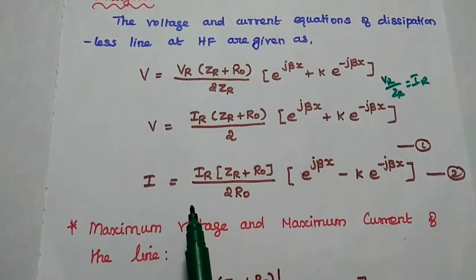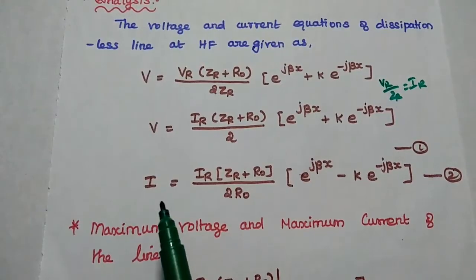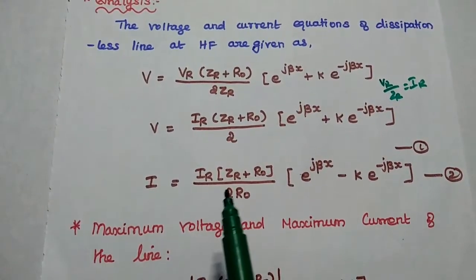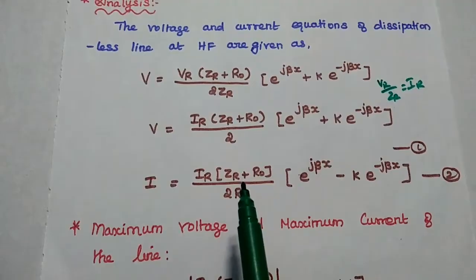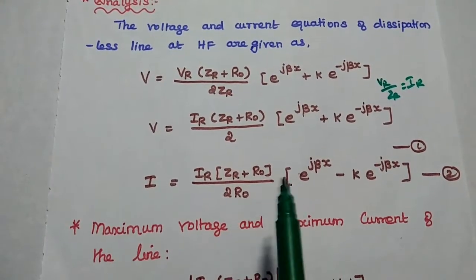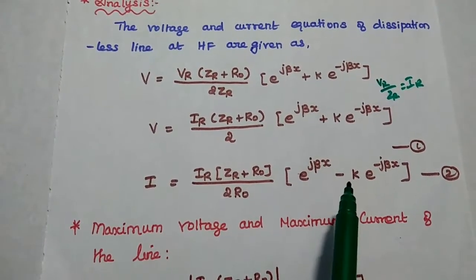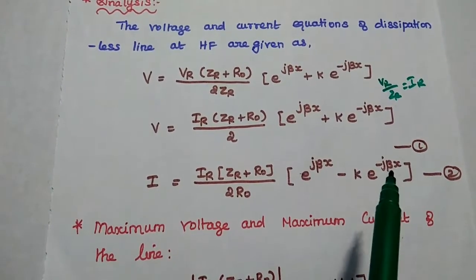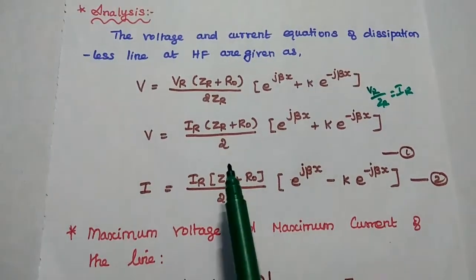Next we consider the current equation of the zero dissipation line. It is: I = I_R × (Z_R + R₀) / (2R₀) × (e^(jβx) − K·e^(-jβx)). Consider this as the second equation.